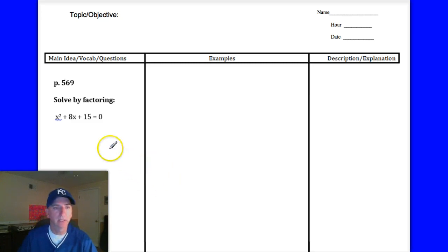So let's take a look at this first example on the back, which actually comes from your book on page 569. Solve this by factoring. So if you would copy it, recopy it in the middle here, and let's talk about it. We have x squared plus 8x plus 15 is equal to zero.